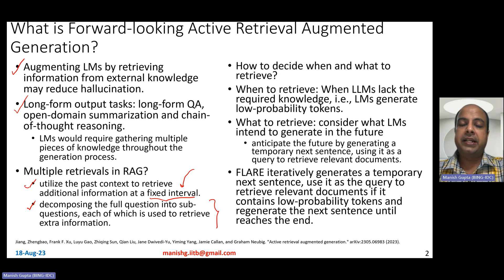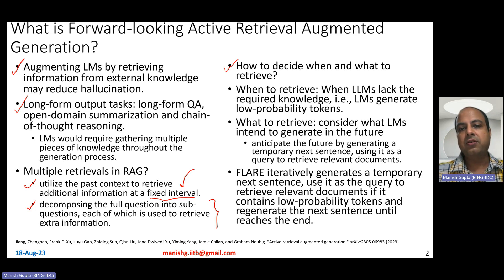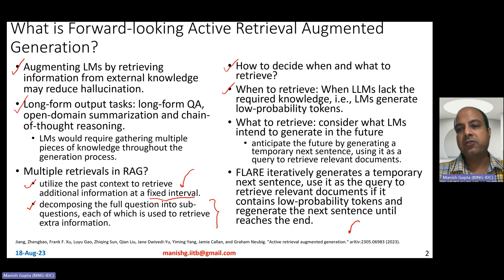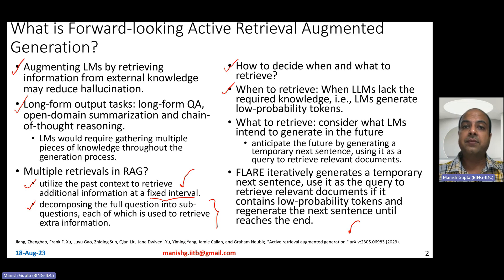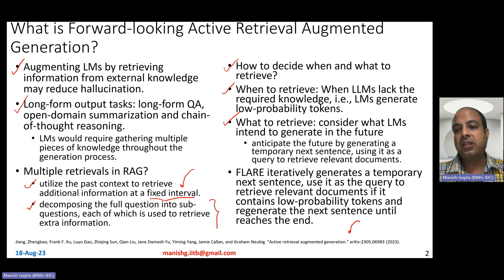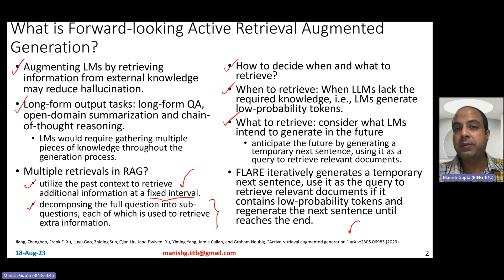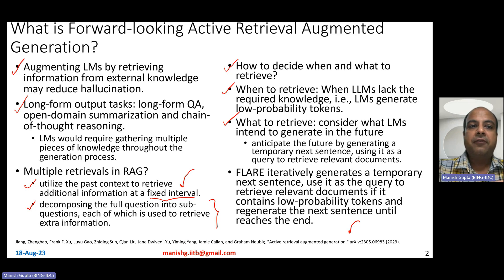In forward-looking active retrieval augmented generation, the idea is you will do multiple retrievals, but you must not do them regularly — you must be efficient about it. So how do you decide when to retrieve and what to retrieve? When to retrieve: they use the LLM's output confidence itself. When the LLM lacks the required knowledge — when it says it's not very confident about the probability of what it generated — that is the time you should retrieve. What to retrieve: you must consider what the language model intends to generate in the future — anticipate the future by generating a temporary next sentence, and if that sentence also has low probability tokens, then do retrieval to generate better outputs.